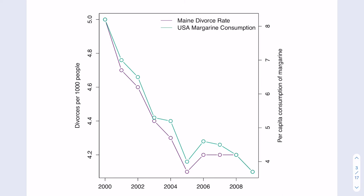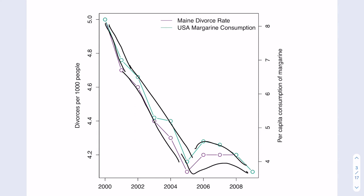Looking at this figure, what do you conclude about the relationship between Maine's divorce rate and U.S. margarine consumption? Does Maine's divorce rate track margarine consumption? It certainly seems to — as the divorce rate in Maine goes down, consumption of margarine also goes down, falling very closely one-to-one. So we could say there is an association between Maine's divorce rate and U.S. margarine consumption.